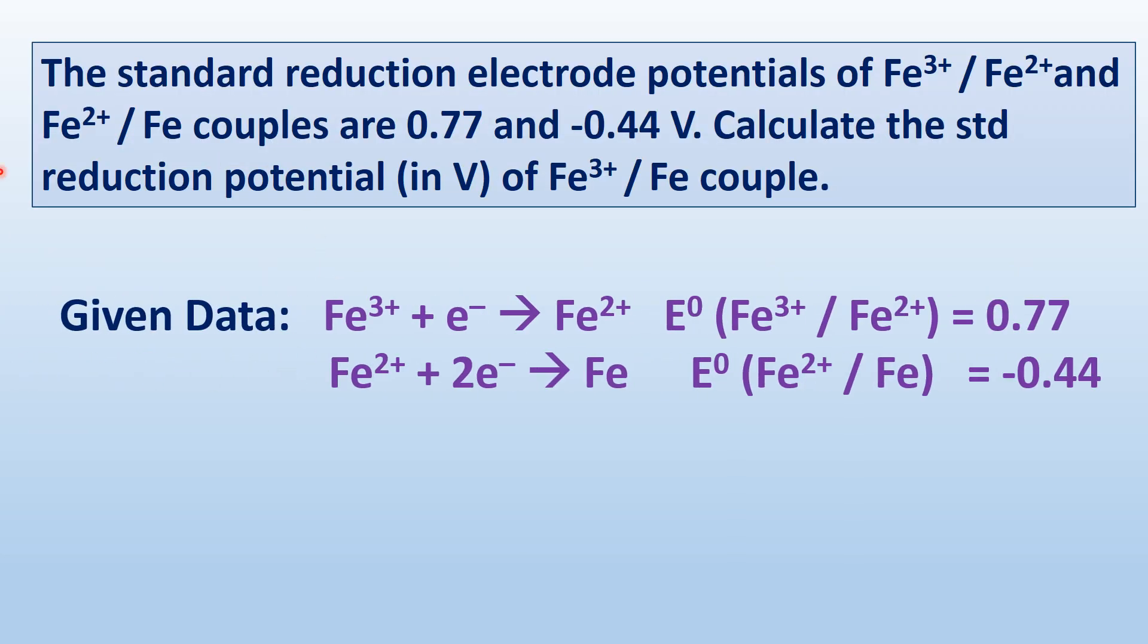Let us write the data given in this problem. Fe³⁺ is reduced to Fe²⁺, the standard reduction potential E⁰ is equal to 0.77. And Fe²⁺ plus 2 electrons gives Fe, E⁰ equal to minus 0.44.